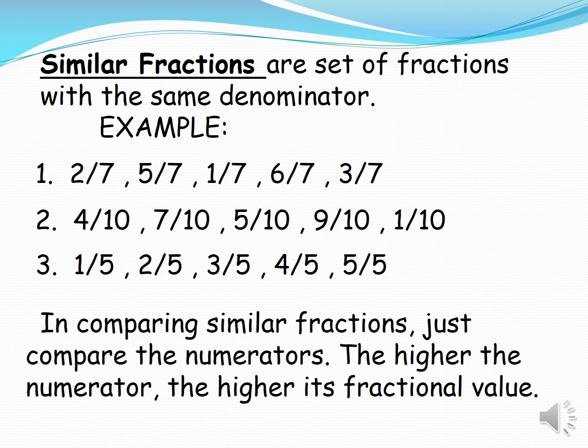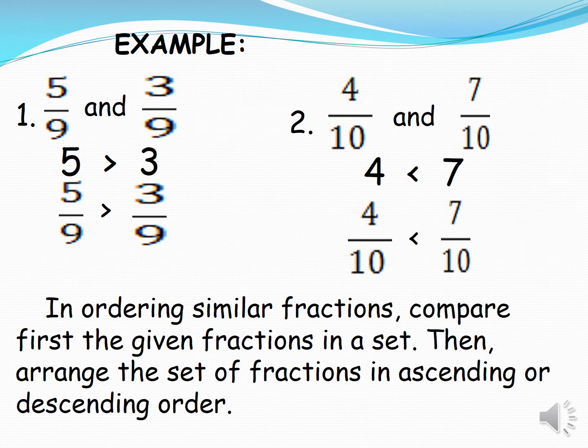In comparing similar fractions, just compare the numerators. The higher the numerator, the higher its fractional value. Example number one: five ninths and three ninths. Five is greater than three, so five ninths is greater than three ninths. Number two: four tenths and seven tenths. Four is less than seven, so four tenths is less than seven tenths.